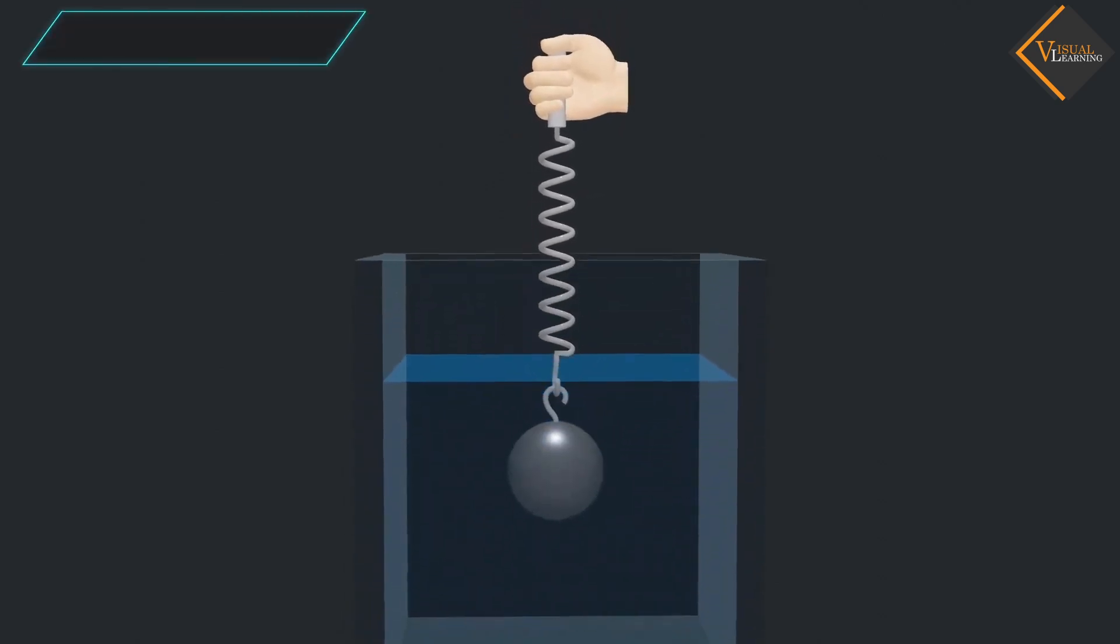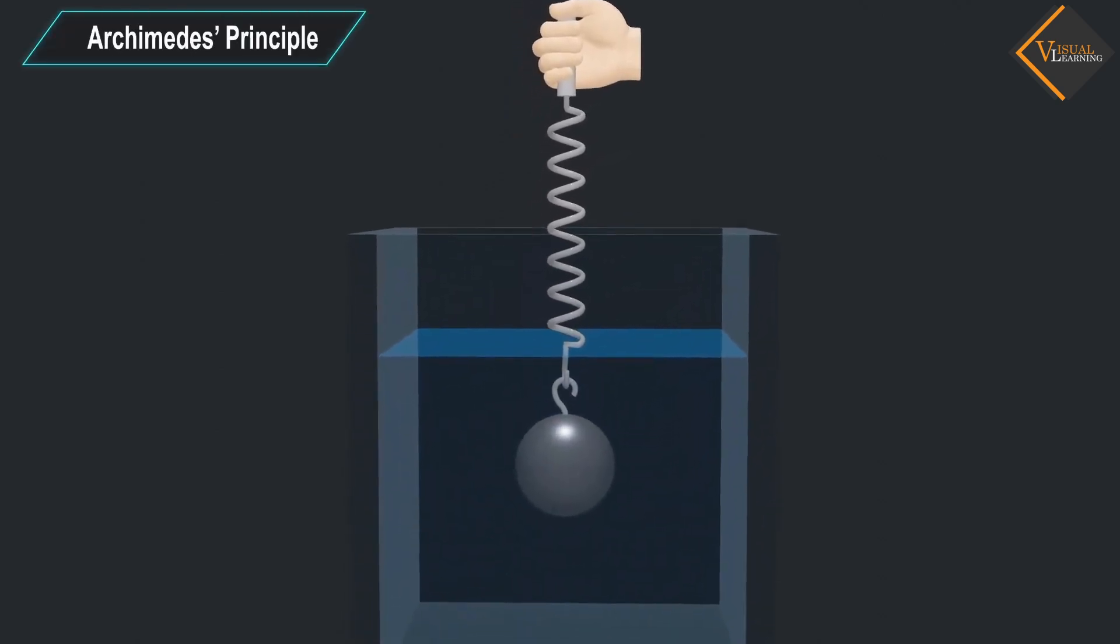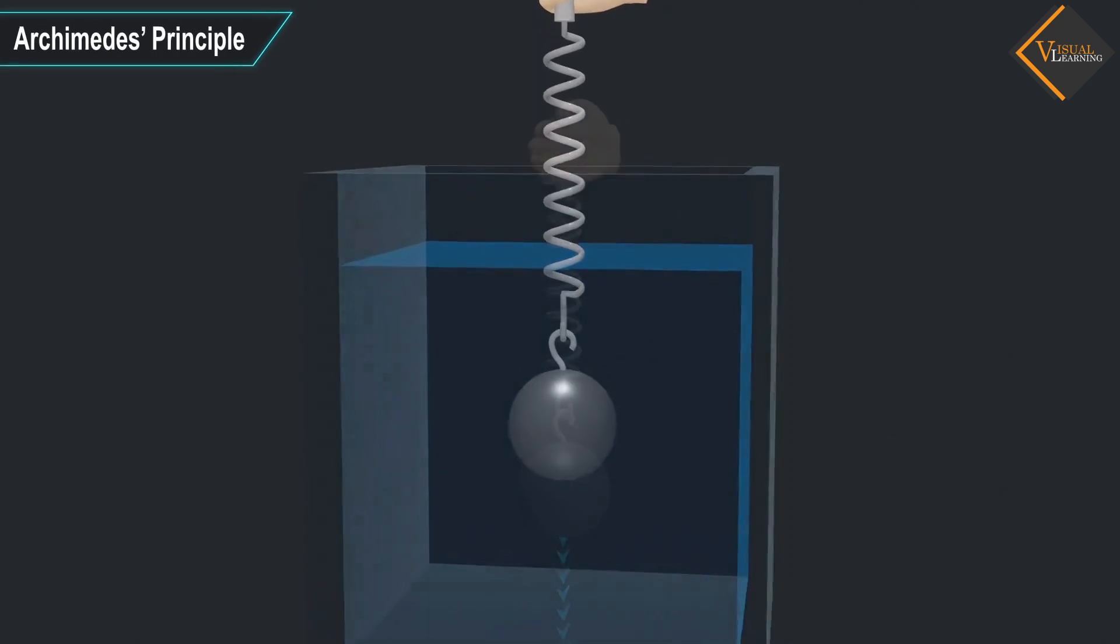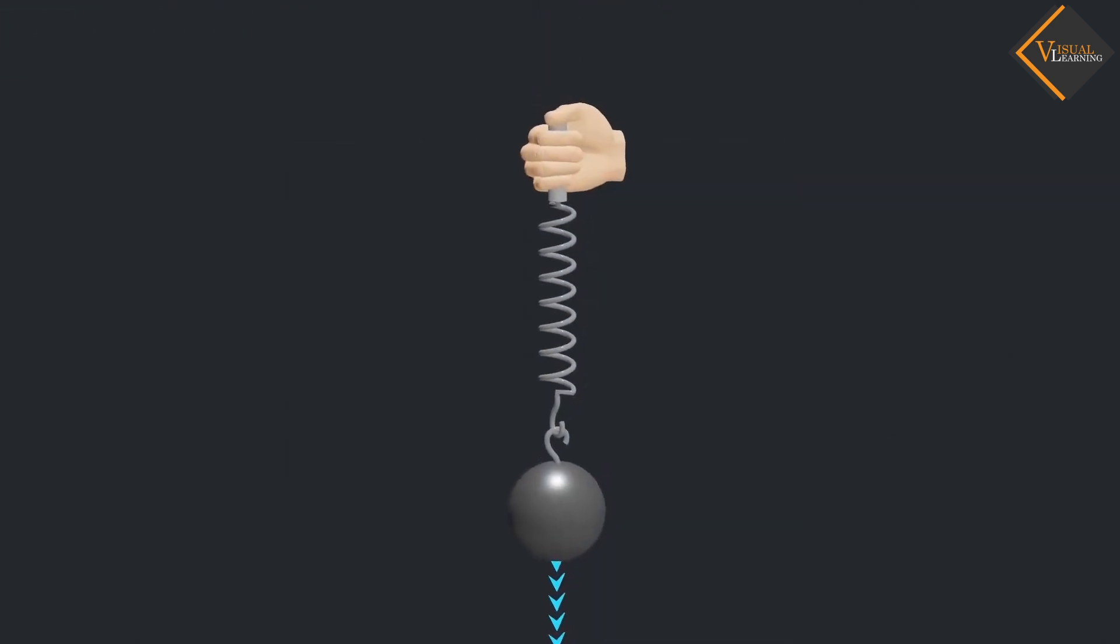In this video, we will understand Archimedes Principle. In the animation, we see that a spring is connected to an iron ball.